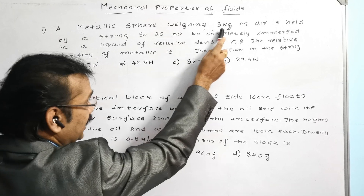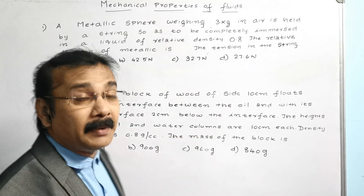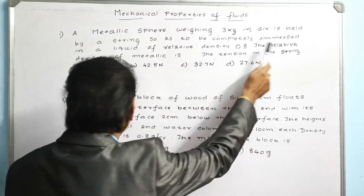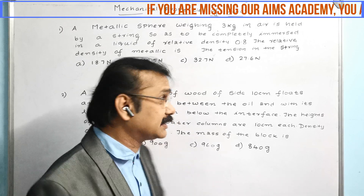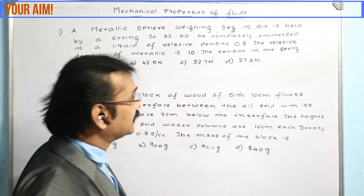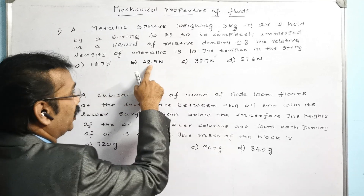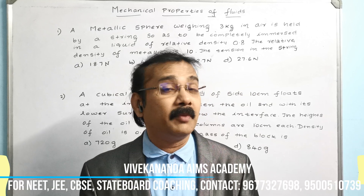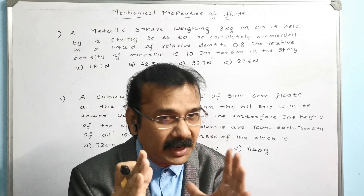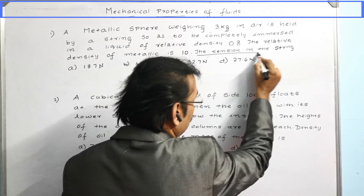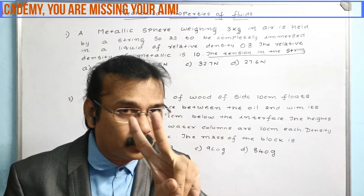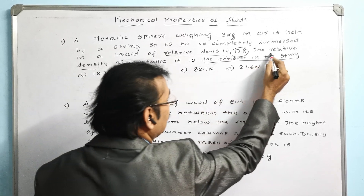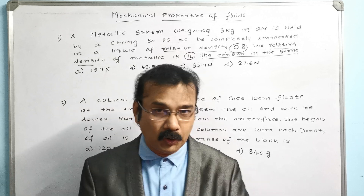Looking at the question again: a metallic sphere weighing 3 kg in air is held by a string, completely immersed in a liquid of relative density 0.8. The relative density of the metallic sphere is 10. Note that two relative densities are given — 0.8 and 10 — and the mass is also given. These are the key values to identify.